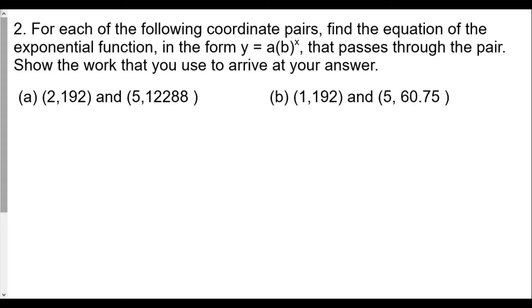Welcome back everybody. This is our Algebra 2 exponential functions lesson number 4: finding equations of exponential functions, homework review part 2. In our last review we had gone over finding exponential functions from coordinate pairs, and this question from part 2 number 2 is very similar. For each of the following coordinate pairs, find the equation of the exponential function in the form y equals a times b to the x power that passes the pair.